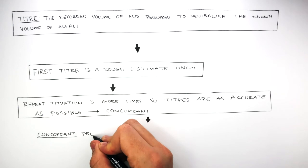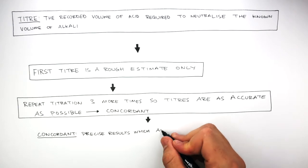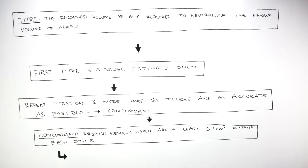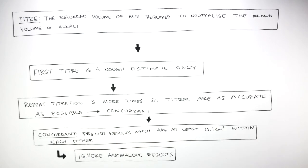Concordant is when you have precise results which are at least 0.1 cubic centimetres within each other. And it's important to ignore anomalous results. Do not include anomalous results in your mean data.